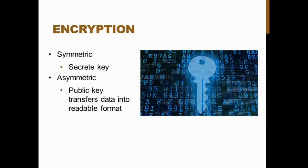Encryption is a way of sending information across information systems — such as between computers — safely so it can't be intercepted and used in a breach. There are two different types of encryption: symmetric, which uses a secret key to decode jumbled letters and numbers into a readable format, and asymmetric, which uses a public key to do the same thing.